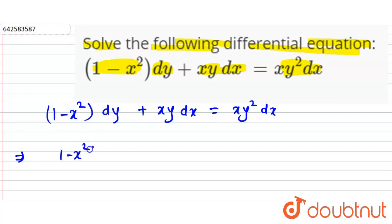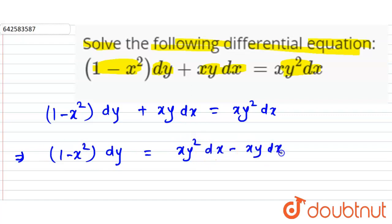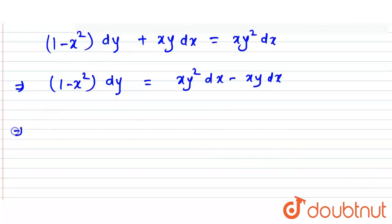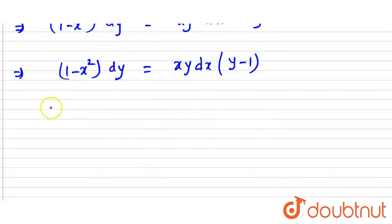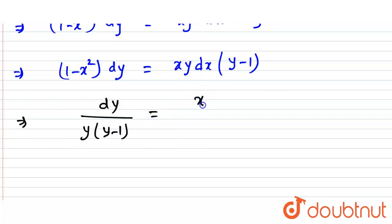We can write this as (1 - x²) dy = xy² dx - xy dx. Or we can factor the right side: (1 - x²) dy = xy dx · (y - 1). Rearranging, this gives dy / [y(y - 1)] = x dx / (1 - x²).